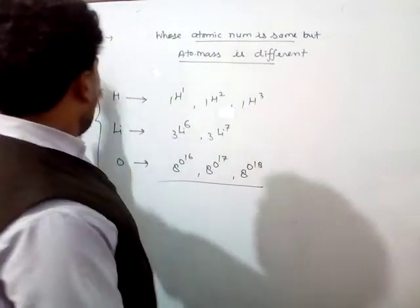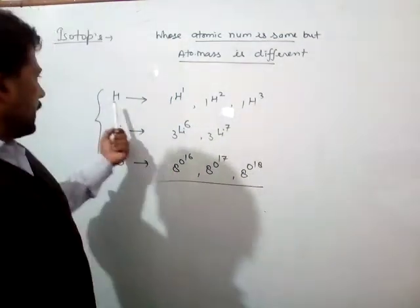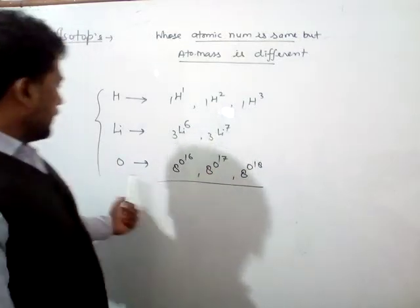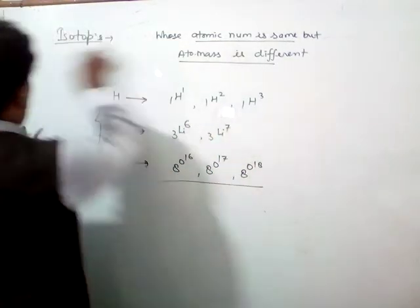So the isotopes are known as isotopes and here are three isotopes of hydrogen, two isotopes of lithium, and three isotopes of oxygen. Okay? Atom.